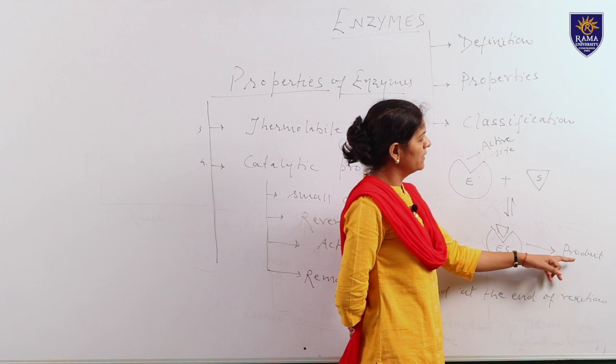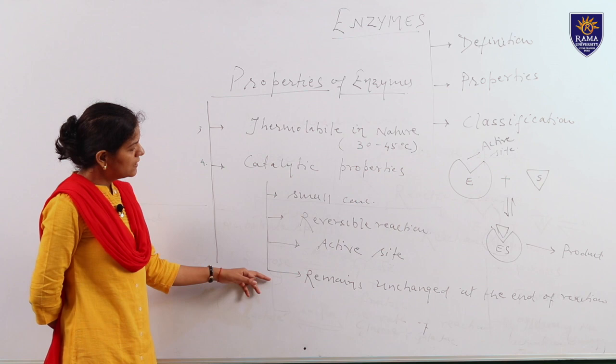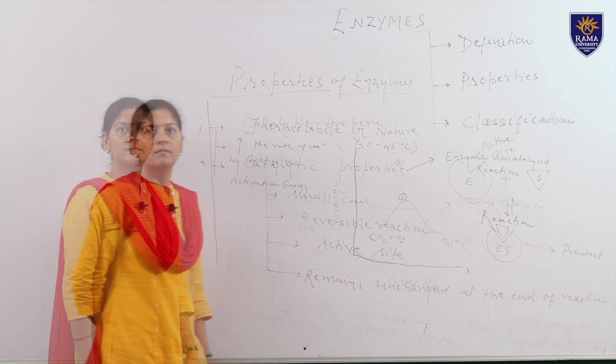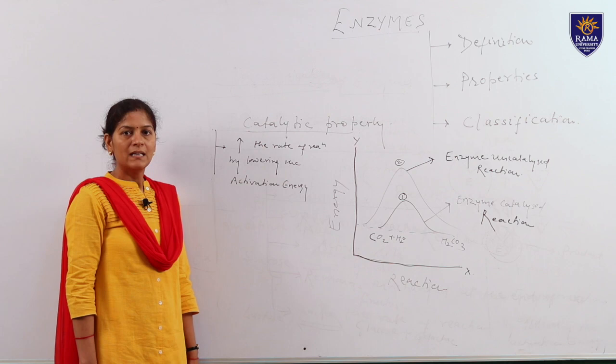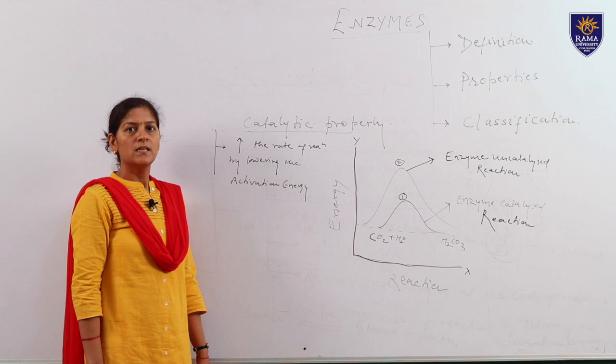The last catalytic property is that enzymes remain unchanged at the end of the reaction. Enzymes accelerate the rate of reaction by lowering the activation energy. The activation energy is that amount of energy which is required to start a particular reaction.